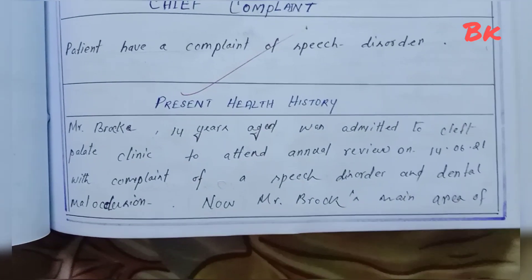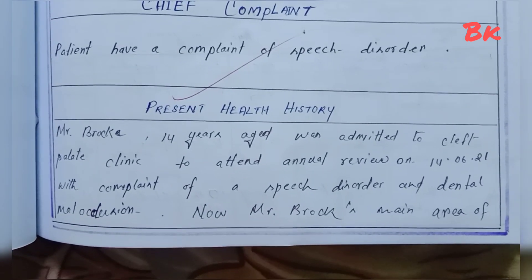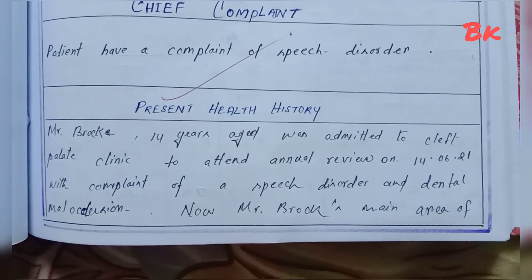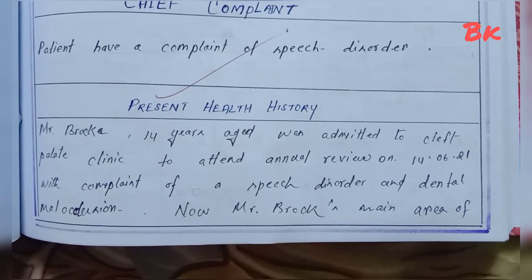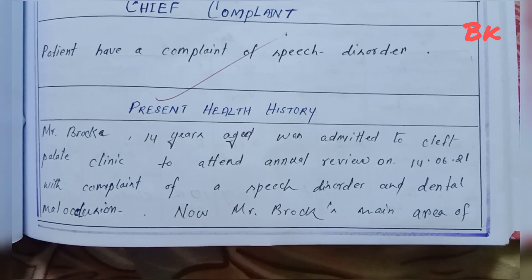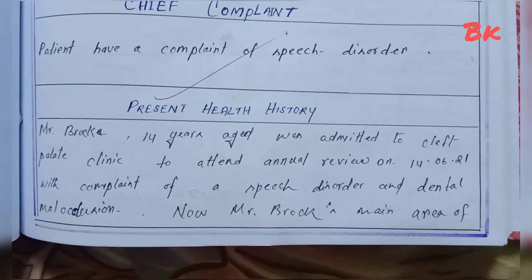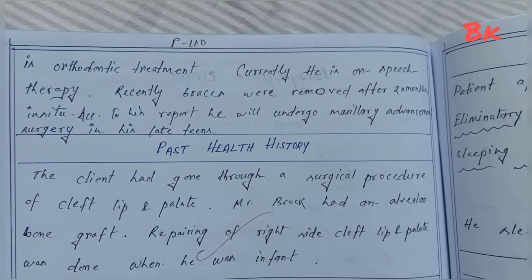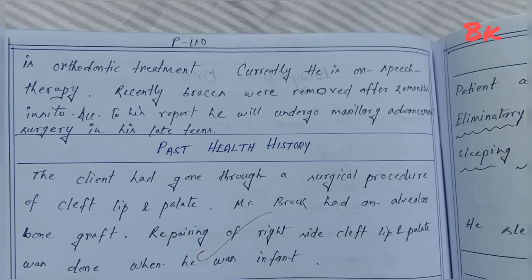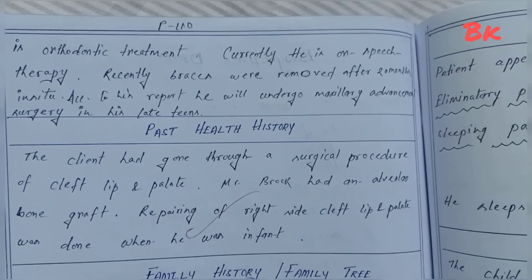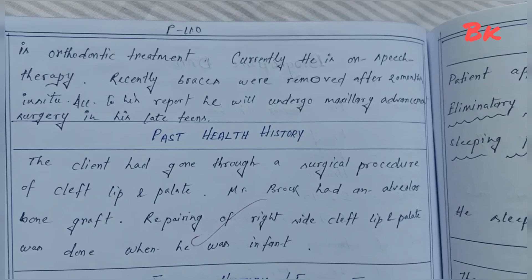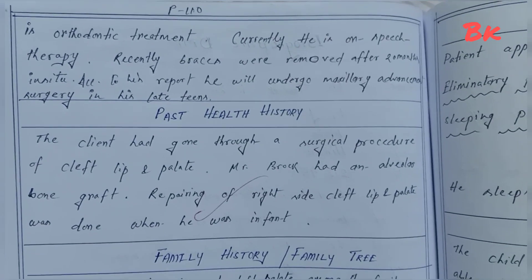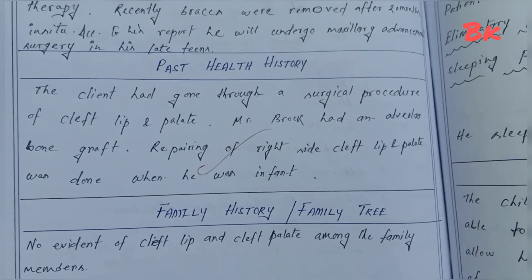Present health history: Mr. Broke, 14 years old, was admitted to the cleft palate clinic to attend an annual review on 14/6/2021 with complaints of speech disorder and dental malocclusion. Mr. Broke's main area is orthodontic treatment. Currently he is on speech therapy. Recently braces were removed after 20 months in situ. According to his report, he will undergo maxillary advancement surgery in his late teens.